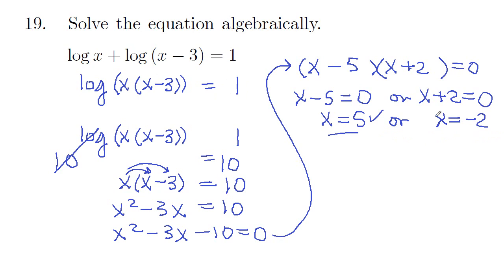But x equals negative 2, when you put that in here, you've got log of negative 2. In here, you'll have negative 2 minus 3, log of negative 5, not defined. So this one does not check. That's an extraneous solution. So our solution here is x equals 5.